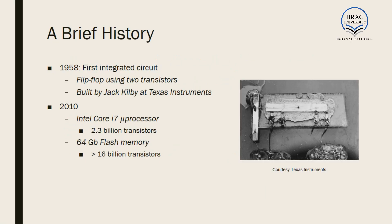Before we move on to the actual course content, let's discuss a little bit about the history — how everything started. To trace back to the beginning of this semiconductor industry, we have to go back to 1958. During 1958, the first integrated circuit was developed. It was a basic flip-flop, which you have heard about in your digital logic design course. It was built with just two transistors by Jack Kilby at Texas Instruments.